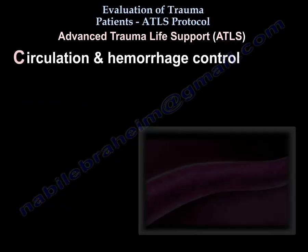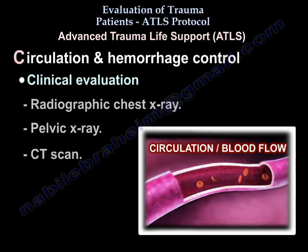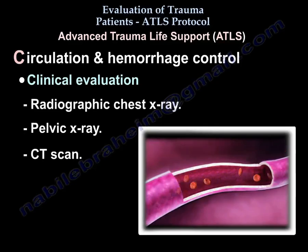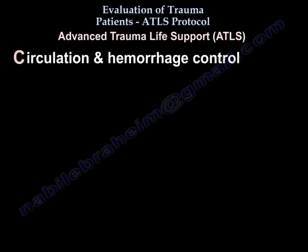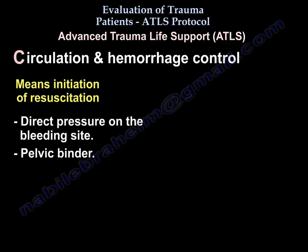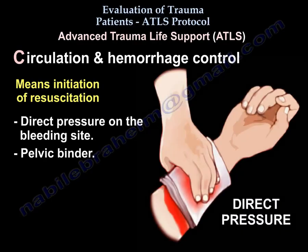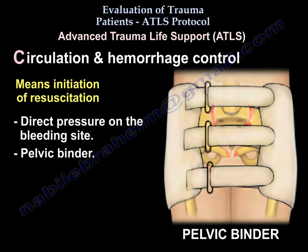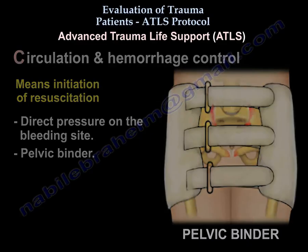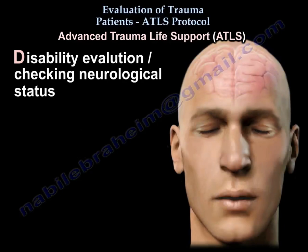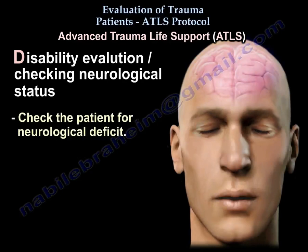Circulation problems will be identified clinically or radiologically via chest X-ray, pelvic X-rays, or CT scans. Circulation and hemorrhage control means initiating resuscitation, applying direct pressure on the bleeding site, or using a pelvic binder. Next is disability and neurological exam to determine if the patient has a neurological deficit.